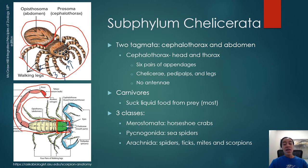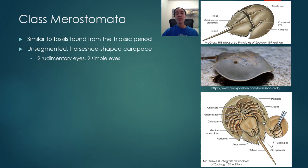There are three classes of arthropods within subphylum Chelicerata: Merostomata, which includes horseshoe crabs; Pycnogonida, which are sea spiders; and Arachnida, which includes spiders, ticks, mites, and scorpions.